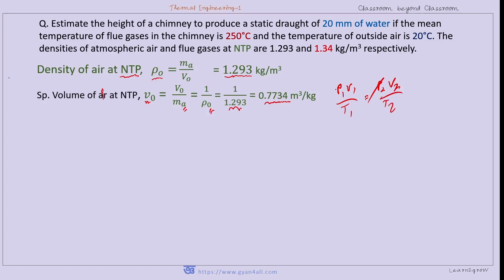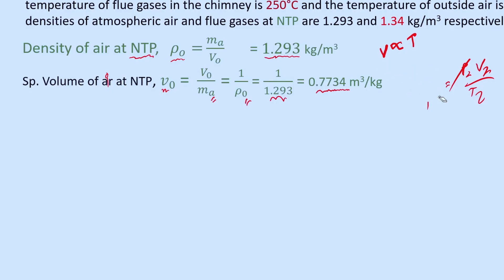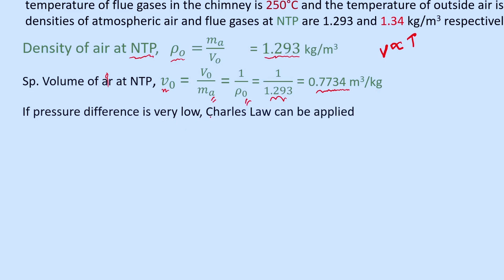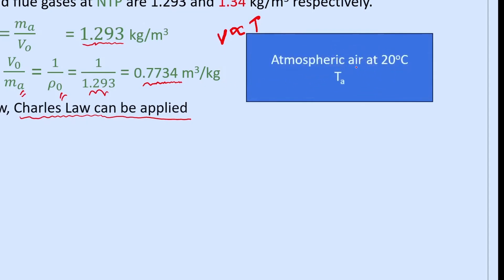We know the characteristic gas equation: P₁V₁/T₁ = P₂V₂/T₂. If P₁ equals P₂, this simplifies to V₁/T₁ = V₂/T₂, meaning volume is directly proportional to temperature — that is Charles's Law. In this case, the pressure difference is very small, so we can apply Charles's Law.